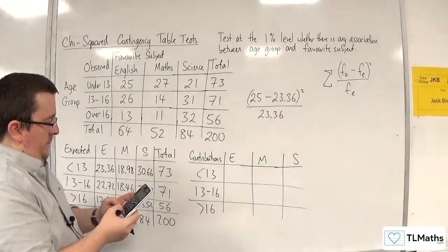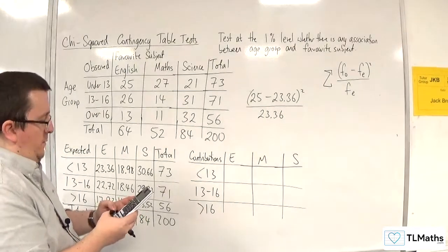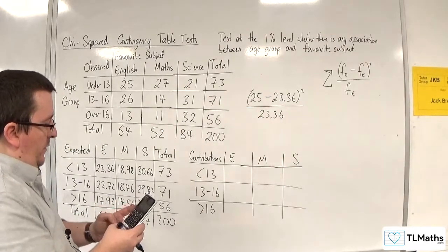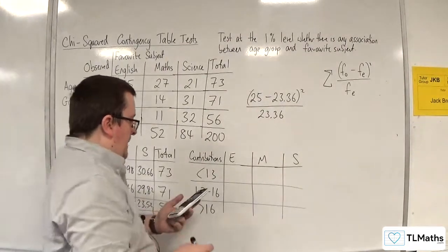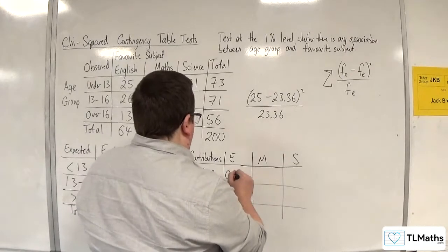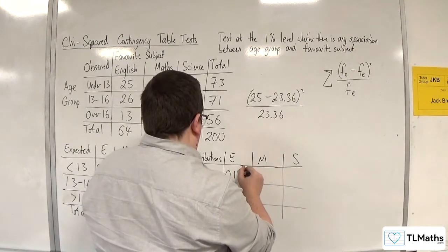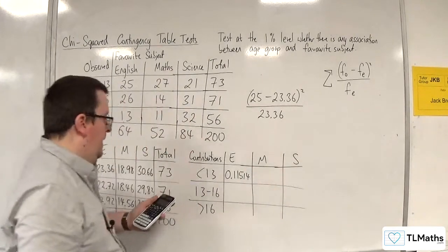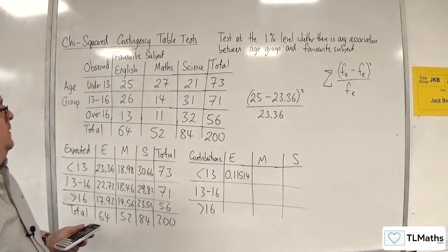So 25, put in the bracket, 25 take away 23.36 squared, divided by 23.36. And I'm going to write these to five decimal places. So 0.11514.